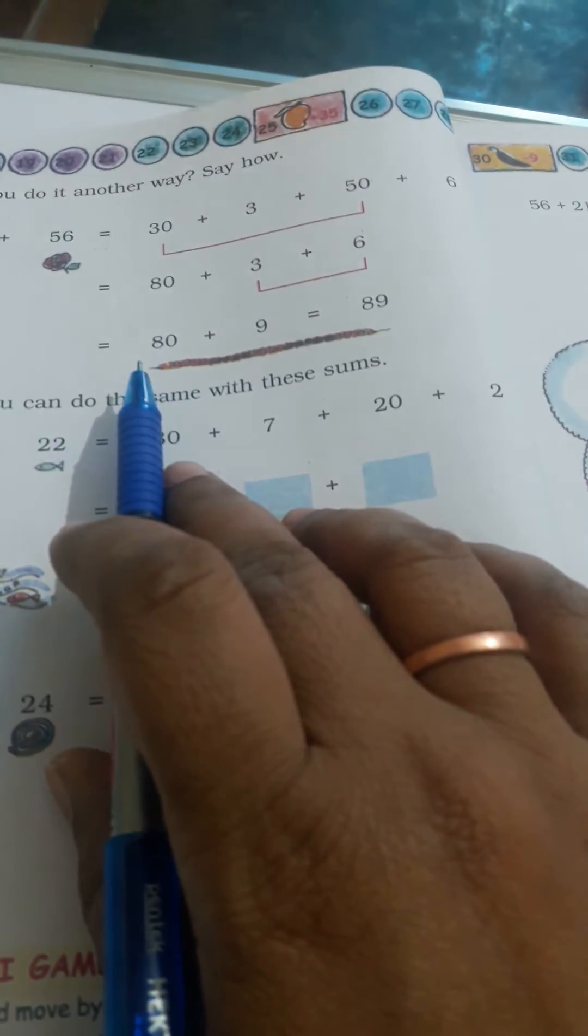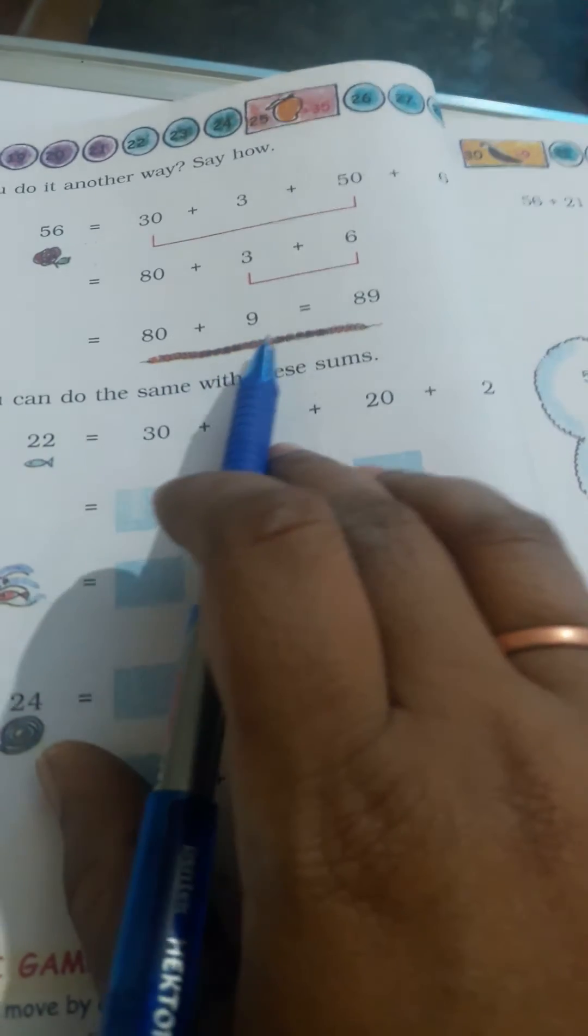Now it has become very easy to add these numbers. It is 80 plus 9 is equal to 89. If we have to do the same sum, 33 plus 56, in the previous method which was given on page 33, so we can write 33 plus 56.